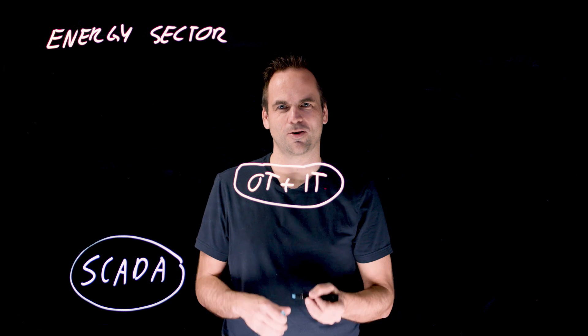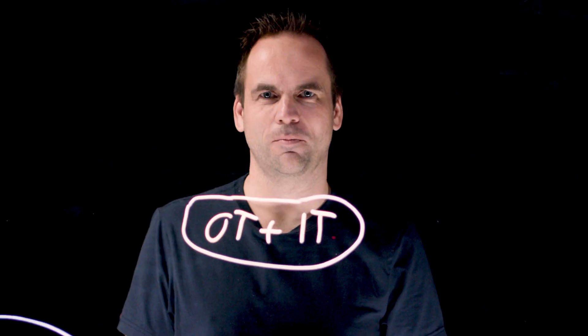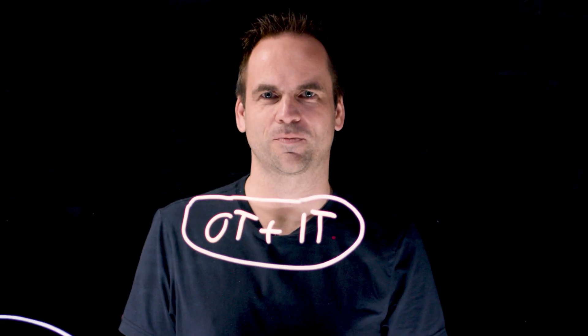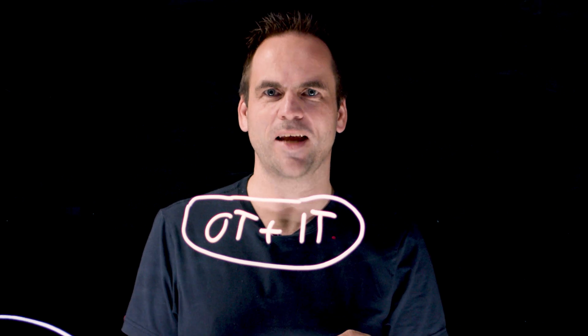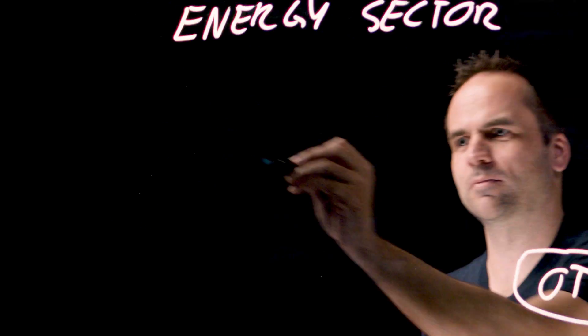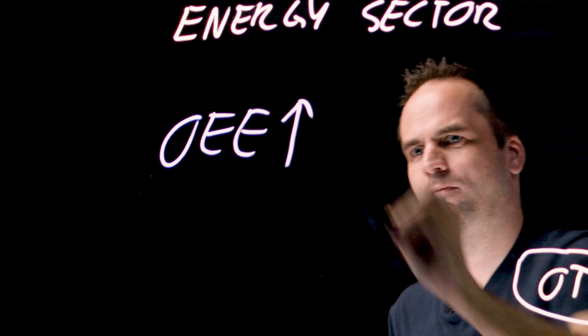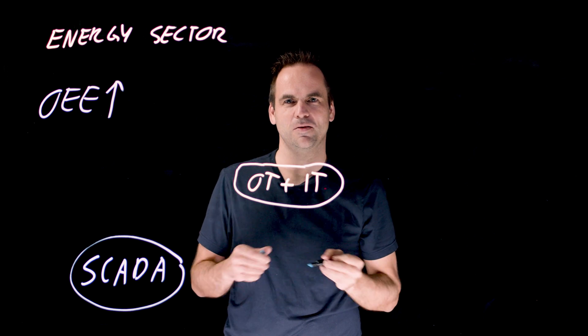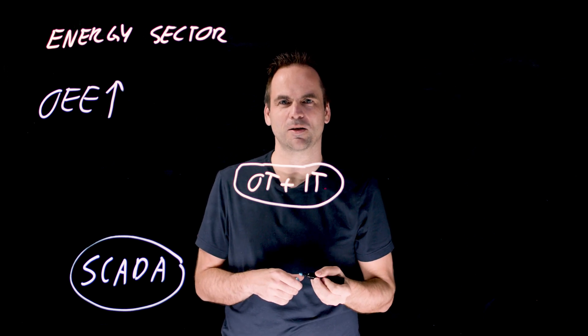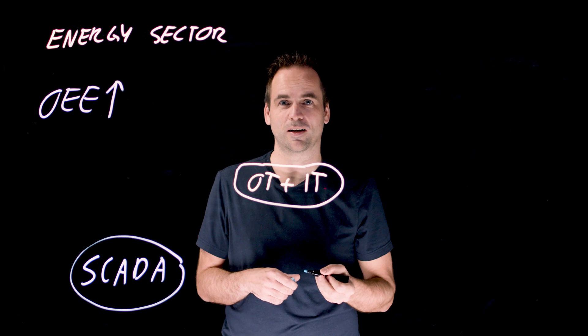And that has to change because there are two business goals behind that at manufacturers, and that includes the energy sector. Number one, improve the overall equipment effectiveness. This means keep your systems running in the production line. Safety is critical but still it can never go down.